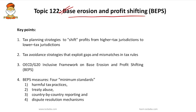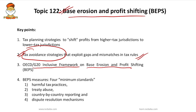The next important topic is Base Erosion and Profit Shifting (BEPS). BEPS refers to corporate tax planning strategies used by multinationals to shift profits from higher-tax jurisdictions to lower-tax jurisdictions, thus eroding the tax base of the higher-tax jurisdictions. In simple terms, it is a tax avoidance strategy used by multinationals to exploit gaps and mismatches in tax rules to artificially shift profits to low or no-tax locations. OECD/G20 provided the inclusive framework on BEPS to tackle tax avoidance through implementation of the measures agreed in the BEPS project.